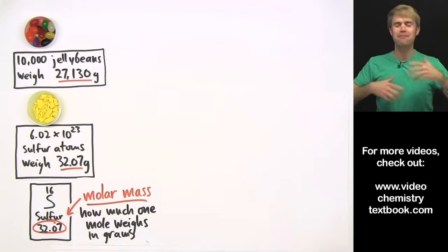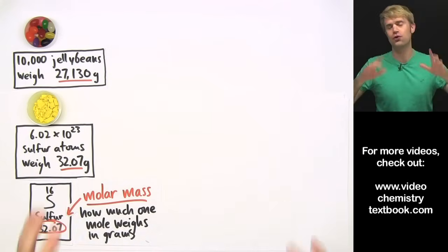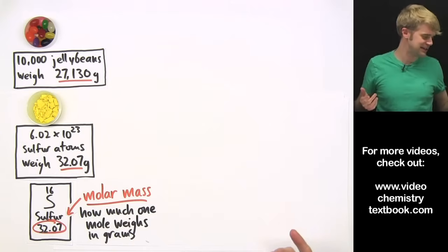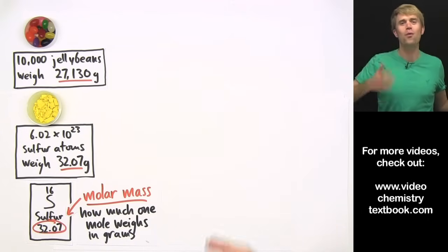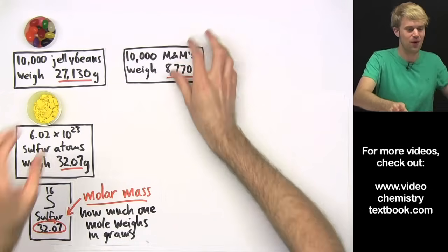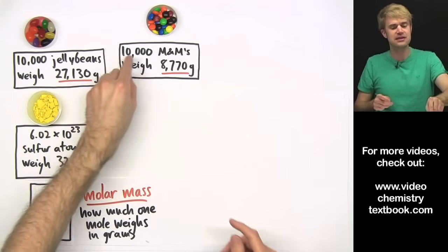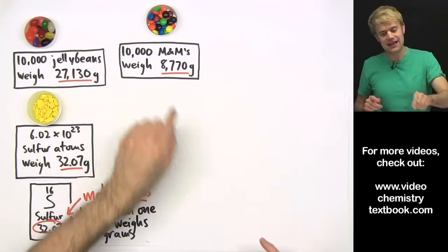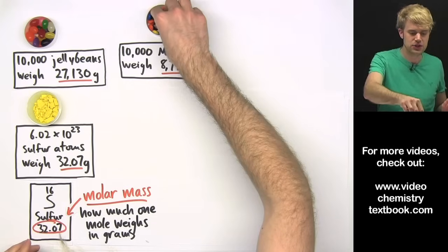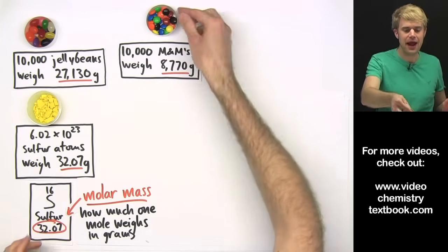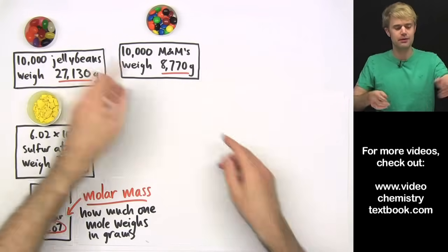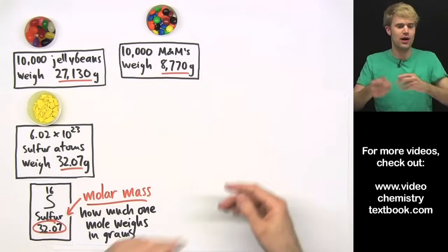Now, let's go back to the candy factory. Imagine that I get all kinds of orders for all sorts of different candies. I can figure out what 10,000 of many different types of candies weigh. So, for example, maybe I have to do M&Ms one day, and I can find out that 10,000 M&Ms weigh 8,770 grams. They weigh less because one M&M is much lighter than one jelly bean, so 10,000 of them are going to weigh less.